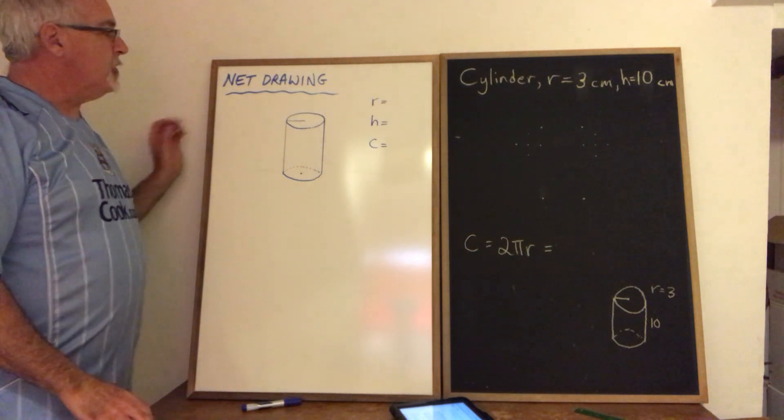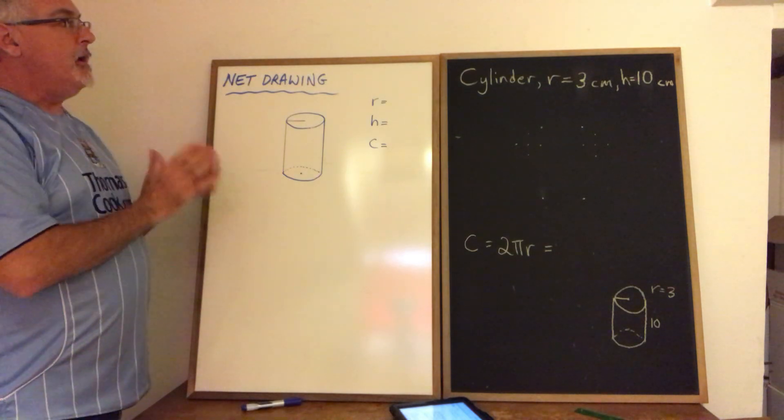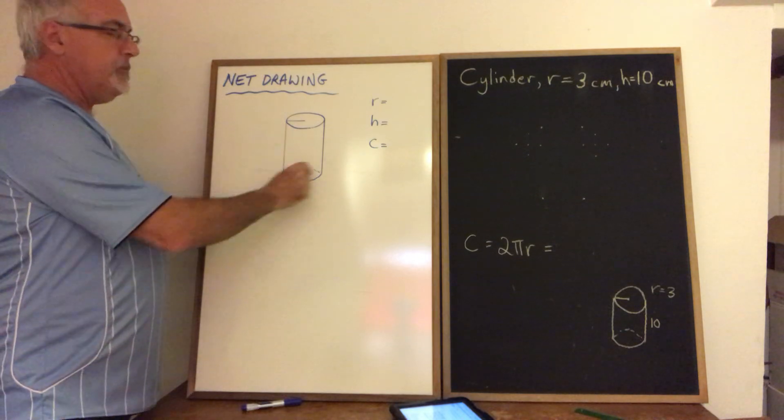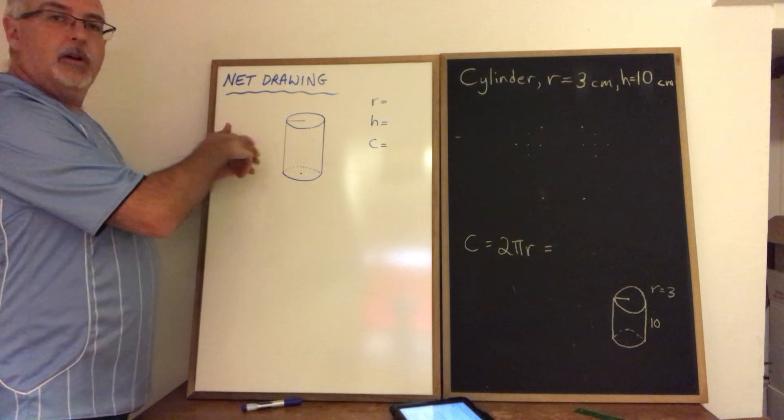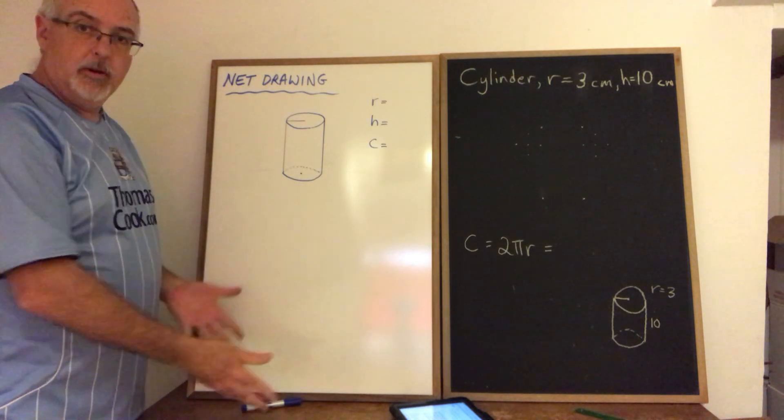Today's Daily Dose of Math is about drawing a net drawing of a cylinder. Now the net drawing is a drawing you do of a three-dimensional figure but you do the drawing in two dimensions.